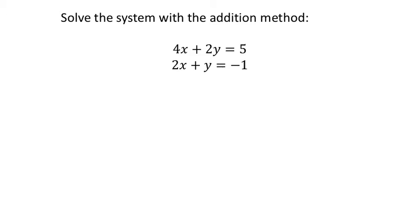All right, here's this system of equations: 4x plus 2y equals 5, and 2x plus y equals negative 1.